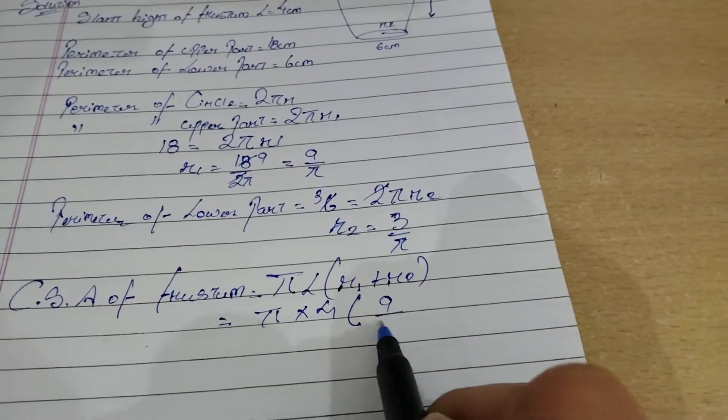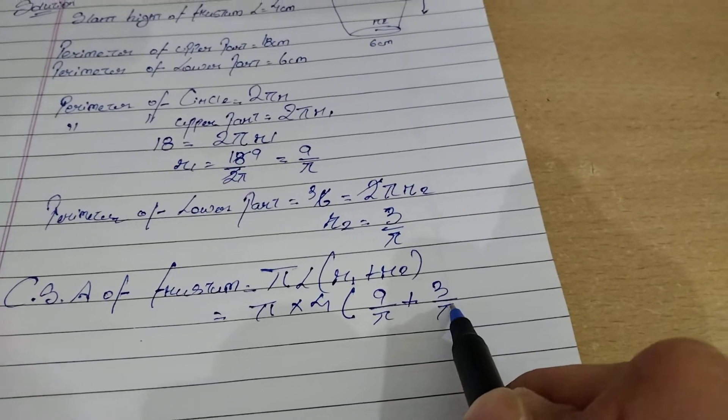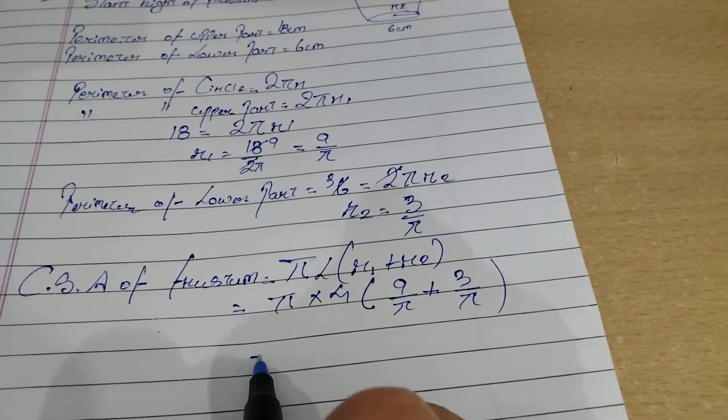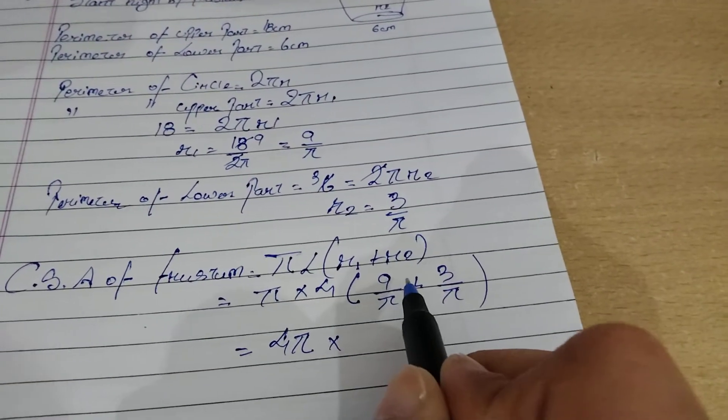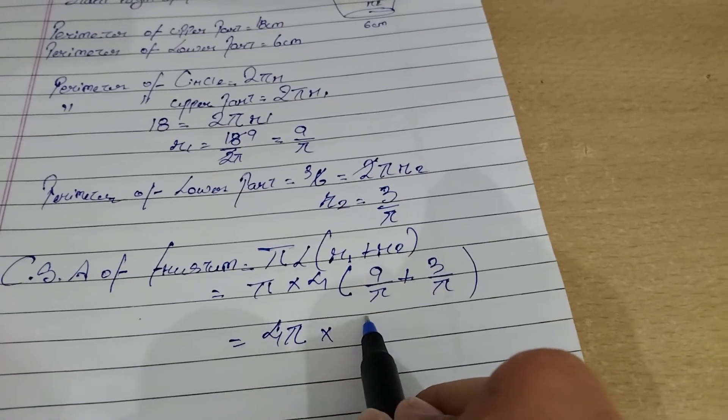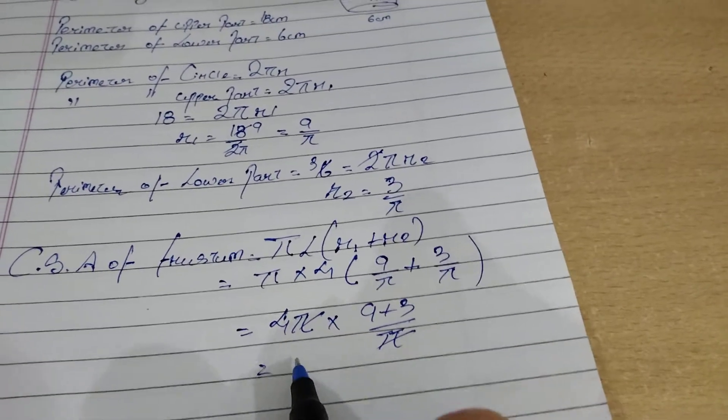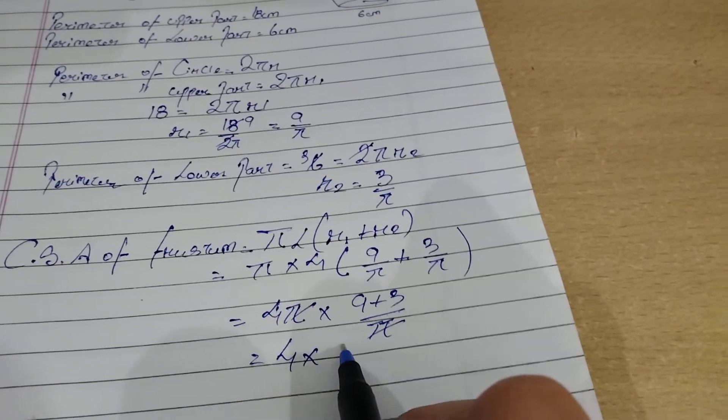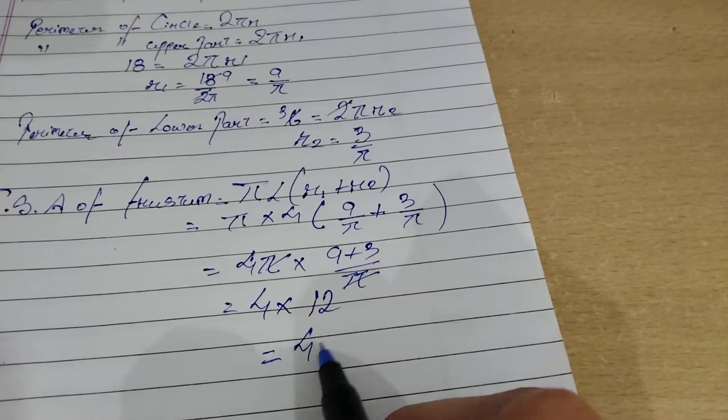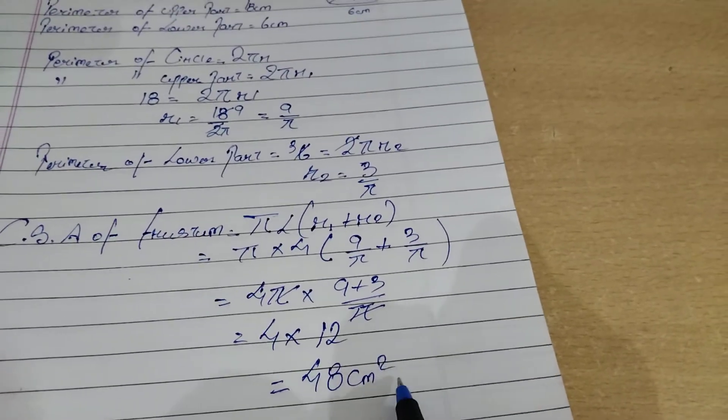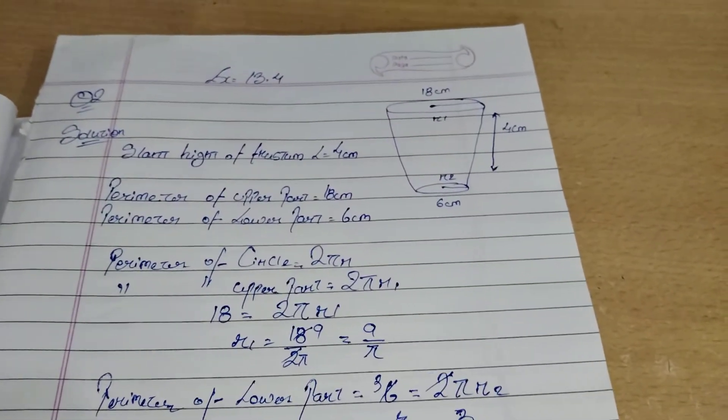The formula is π(r1 + r2)l. Substituting the values, we get π times (9/π + 3/π) times 4, which equals π times (12/π) times 4, which equals 12 times 4, which equals 48 cm². With this we have completed our question 13.4 question number 2. Thank you.